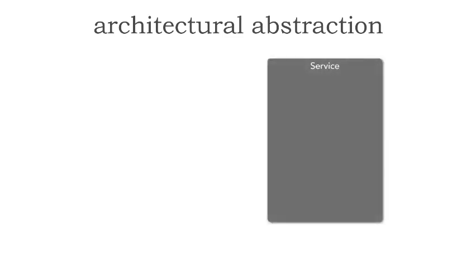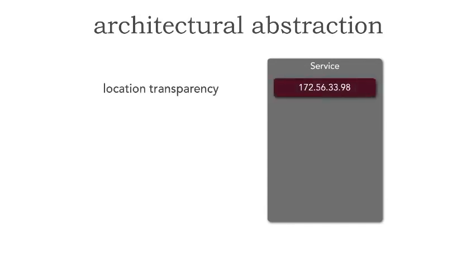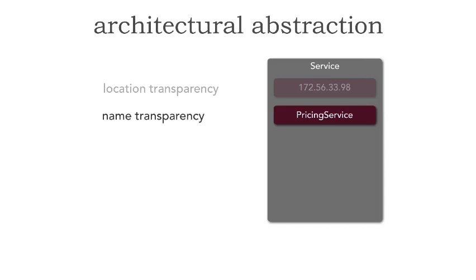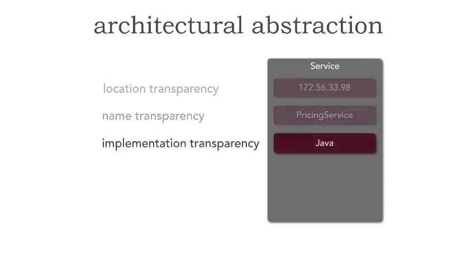Let's say we have a service right here. I want to show you five types of abstraction — I call them levels because I have these from easiest to hardest. The first is location transparency: do I need to know where you are located if I'm going to invoke this particular service? The second is name transparency: when I am invoking you for certain operations, like this pricing service, do I need to know that your name is pricing service? The third level is implementation transparency: when I'm invoking this service, do I need to know the platform or language that you are written in? These three are pretty basic levels of abstraction, but the next two get a little bit harder.